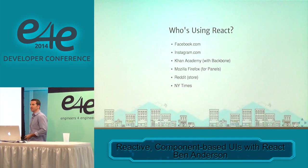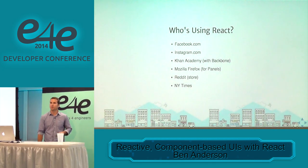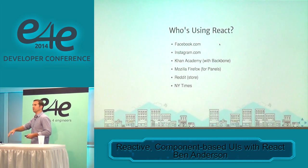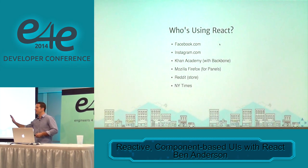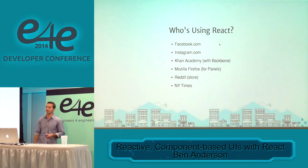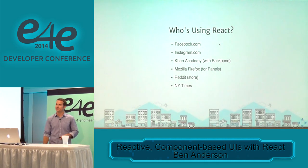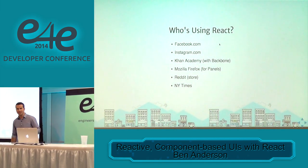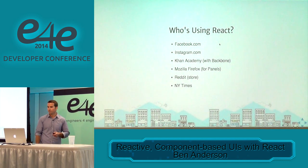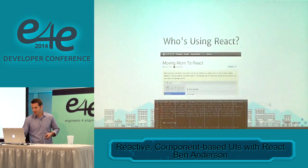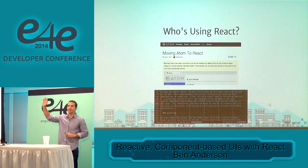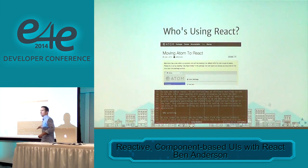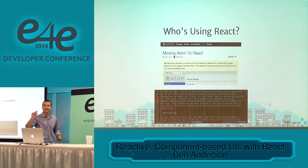So who's using it? Obviously Facebook is. Instagram — the whole app is written in React. Khan Academy has a large Backbone application, and they liked React so much and got so many performance benefits that they started rewriting their Backbone views one by one. Mozilla Firefox uses it for panels — I like this because it's not just about common UIs, it's a general-purpose rendering library. Reddit, New York Times — this list is changing constantly. GitHub, and anyone who uses the Atom editor: that whole user interface you're typing into is done in React. If you've liked anything on Facebook, you've used React.